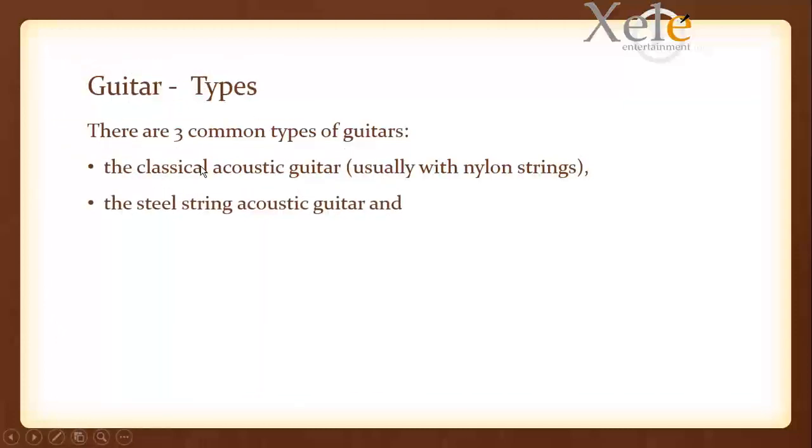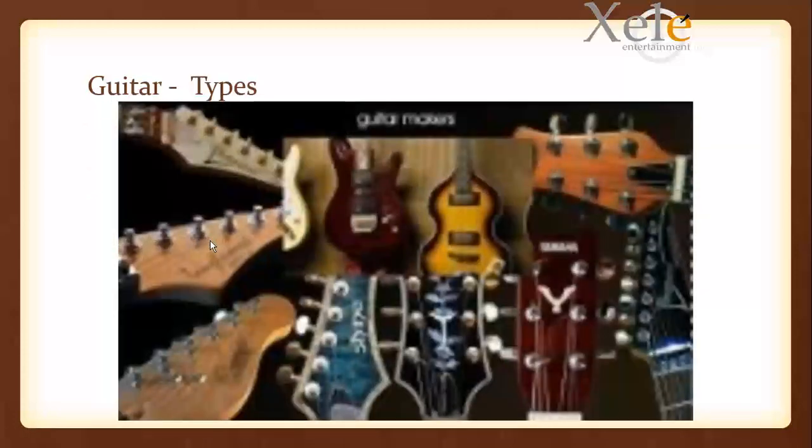The second type of acoustic guitar we have is the steel string acoustic guitar. In some cases, it is called the folk guitar. And finally, we have the electric guitar. Now, of course, there are hybrids that exist amongst these guitars, but generally these are the three common types of guitars that we have.